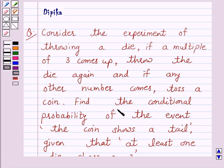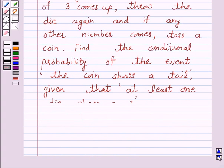Find the conditional probability of the event: the coin shows a tail given that at least one die shows a 3.